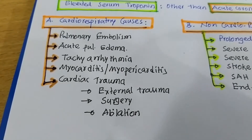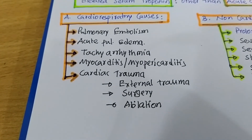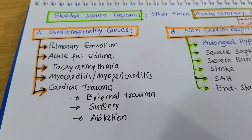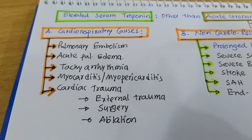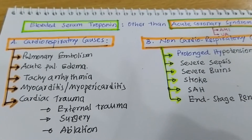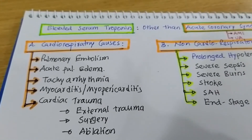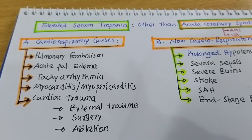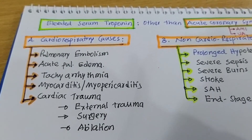Under the cardiorespiratory causes, the most important is pulmonary embolism. I want to emphasize that pulmonary embolism is the most important cause next to acute coronary syndrome that leads to elevated serum troponin. We may be misguided by elevated serum troponin in a pulmonary embolism patient — is it acute coronary syndrome or pulmonary embolism? Clinically, by ECG, X-ray, and other parameters, we must differentiate pulmonary embolism from acute coronary syndrome.